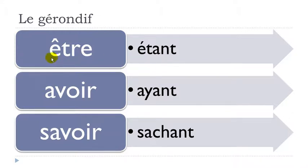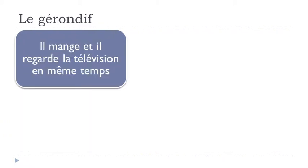To summarize the three exceptions: ÊTRE gives ÉTANT; AVOIR gives AYANT; SAVOIR gives SACHANT.